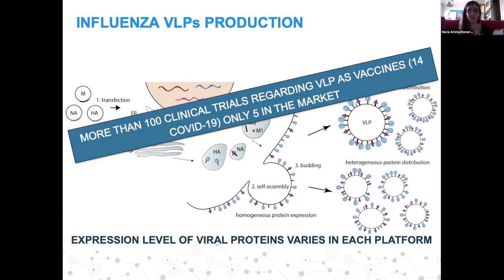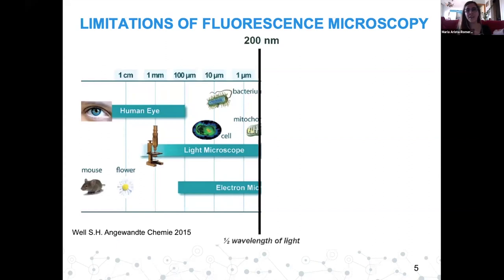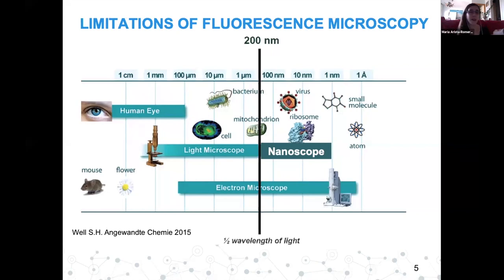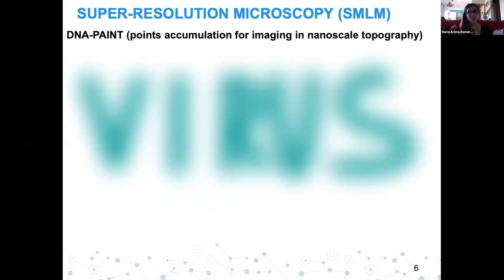Ideally we would study virus-like particles directly, but we face a resolution limitation — VLPs are around 100 nanometers in diameter, so we must break the diffraction limit. Cryo-electron microscopy is one option, but you cannot easily label samples with fluorescent dyes. In nanoscopy, you can use fluorescent antibodies as in normal confocal immunostaining, then use a special microscope. The super-resolution method I'm presenting is called DNA-PAINT — Point Accumulation for Imaging in Nanoscale Topography — which uses a DNA strand on the primary antibody complementary to a DNA strand on the secondary antibody.